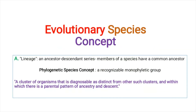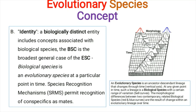A lineage is basically a series of ancestors and descendants, meaning that all members of a species have a common ancestor. Considering this, we can say that a species is a monophyletic group of individuals, which is essentially the phylogenetic species concept. According to this concept, a species is a cluster of organisms distinct from other such clusters, within which we can observe a pattern of ancestry and descent.